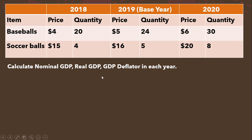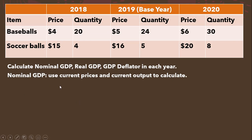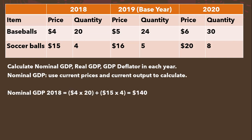We want to calculate nominal GDP, real GDP, and the GDP deflator in each year. We'll start with nominal GDP. To calculate nominal GDP, just use the current prices and current output in each year. So nominal GDP in 2018 uses the current prices and current output: 4 times 20 plus 15 times 4 gives us nominal GDP of $140.